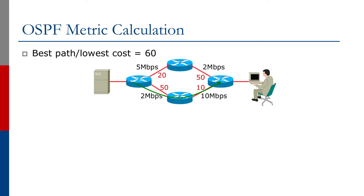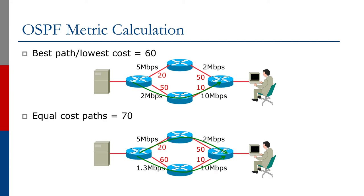In this example, we see two paths between the user and the content they are viewing. One path has a cost of 70, the other has a cost of 60, and OSPF will choose the lowest cost path of 60. In another example with equal cost paths — both at 70 — the routers will load balance over both paths between the content and the end user, even though one upstream link is 10 megabits per second and the other is only 2 megabits per second.